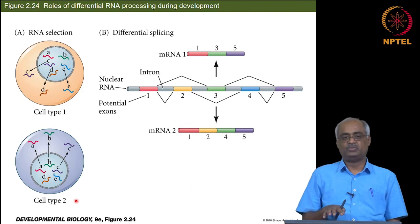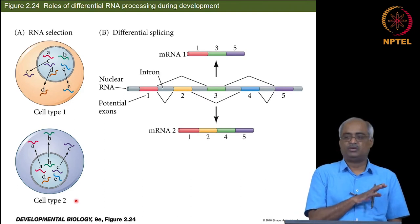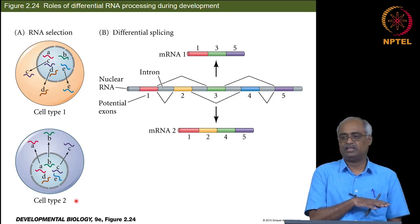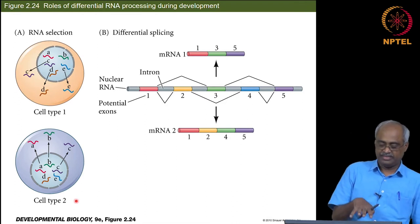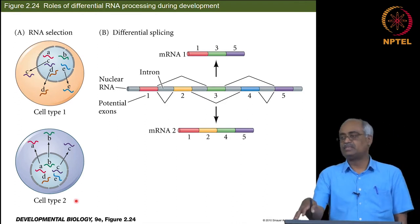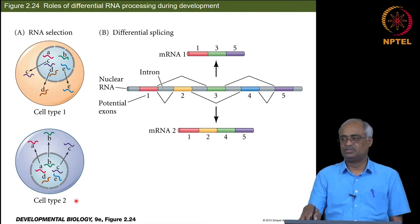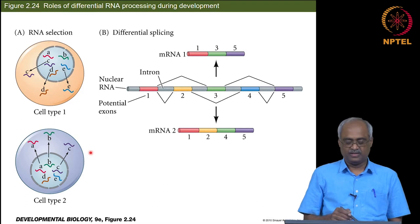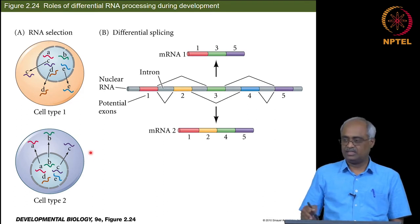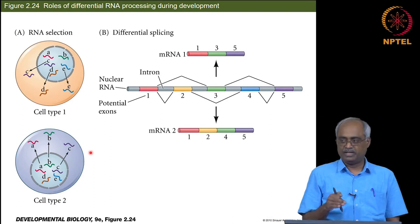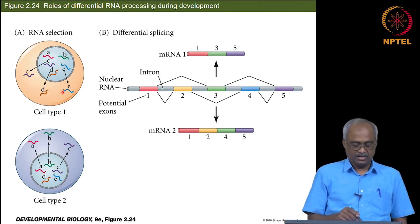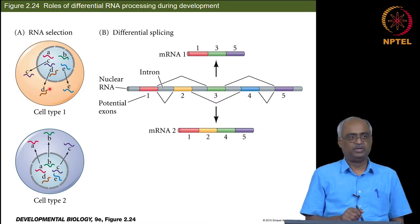You cannot always regulate at the level of methylating histones or DNA and controlling transcription at that level. There may not be enough time for it, and second, these transcripts may be used later at some other stage, so they are made in advance. That is why regulations at the post-transcriptional step make sense depending on temporal and spatial context, and one of them is this kind of nuclear selection.